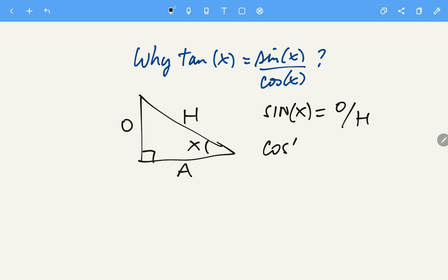The cosine of that angle is equal to adjacent over the hypotenuse and the tangent of that angle equals opposite over adjacent.